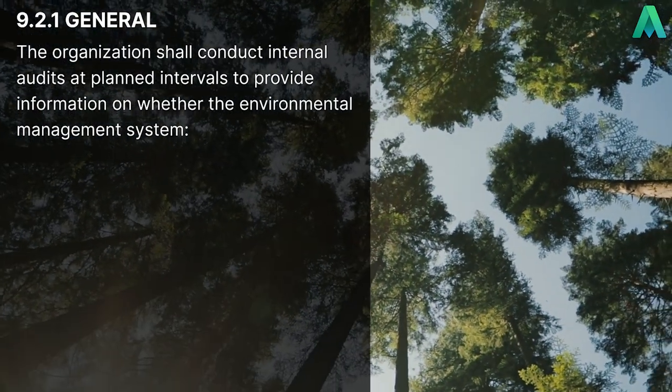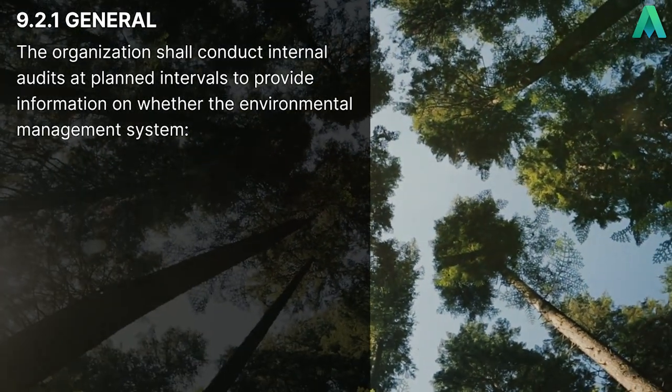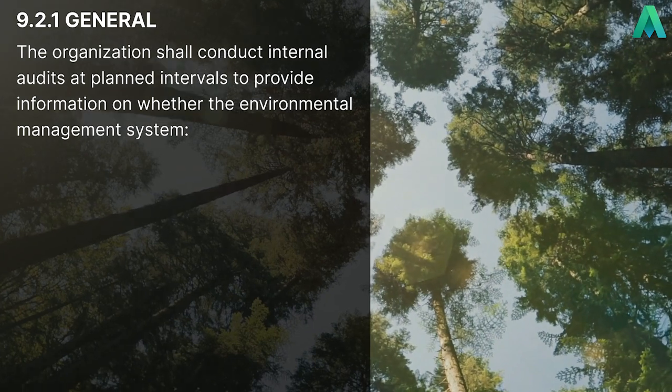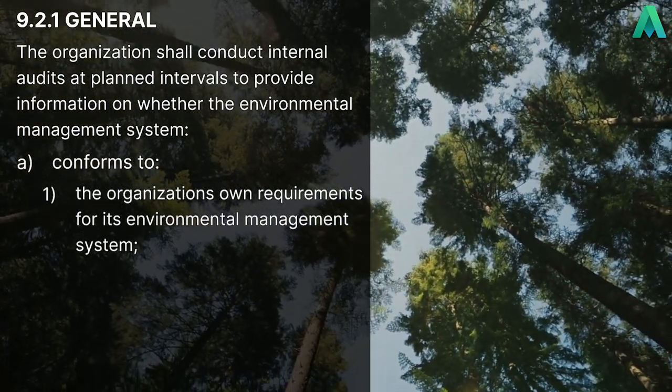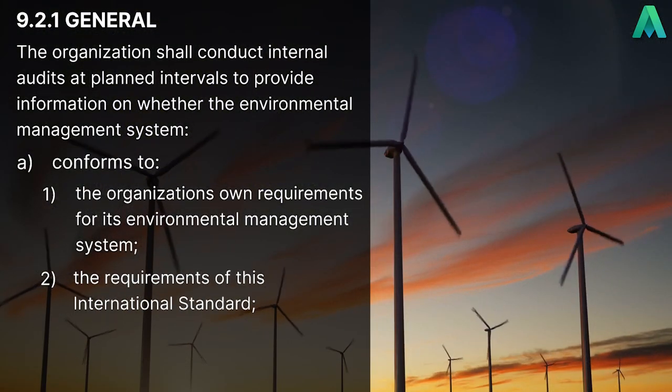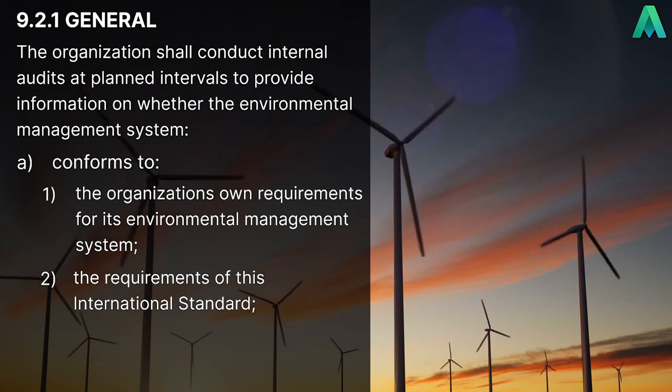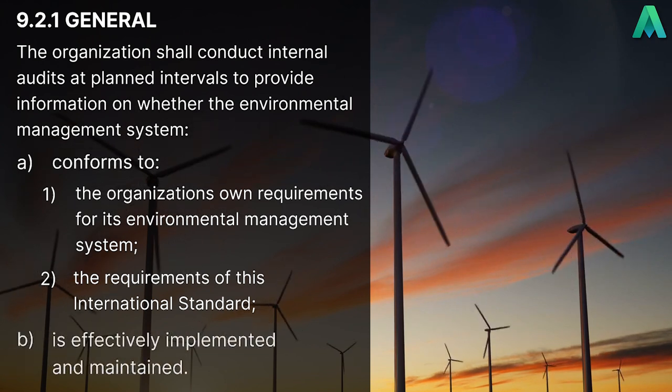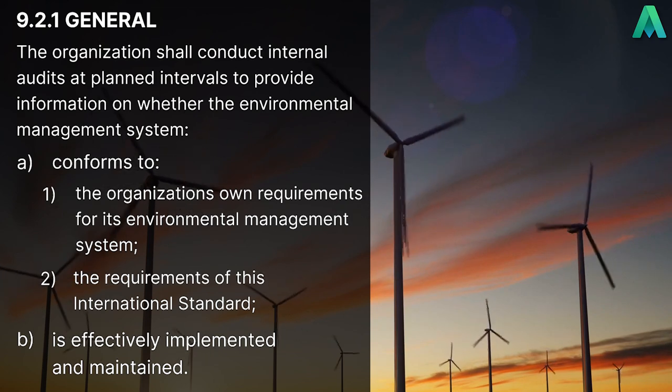This clause starts off with sub-clause 9.2.1 general, where it states the organisation shall conduct internal audits at planned intervals to provide information on whether the environmental management system: A. conforms to 1. the organisation's own requirements for its environmental management system, 2. the requirements of this international standard, and B. is effectively implemented and maintained. This sub-clause is spelling out what our internal audits should be conducted against, which is normally referred to as the criteria.